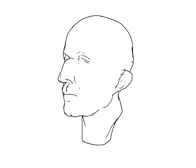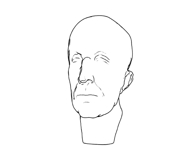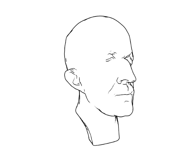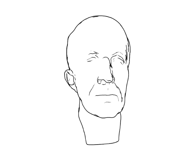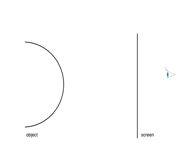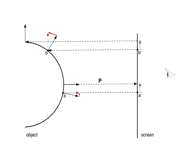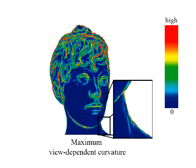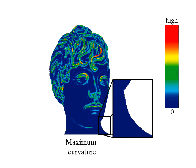We introduce apparent ridges for non-photorealistic line drawings. They are view-dependent extensions of ridge and valley lines. Given an object, a viewing screen, and a projection from the object to the screen, we define view-dependent curvature as the change in normal of the object as one moves a small distance in the screen. Note that this value increases towards the contours because it takes foreshortening of the object into consideration.